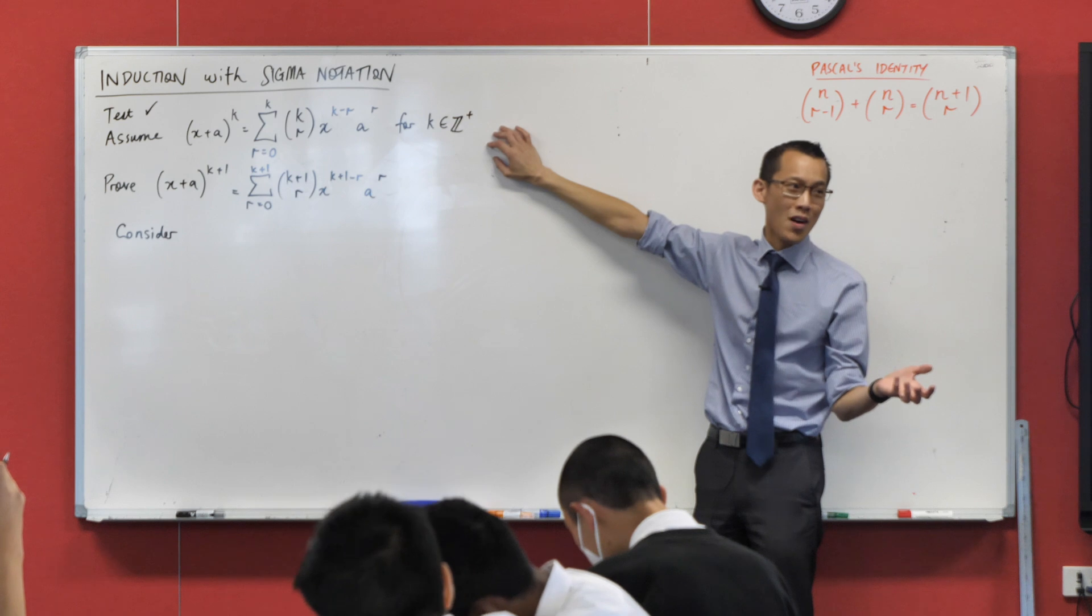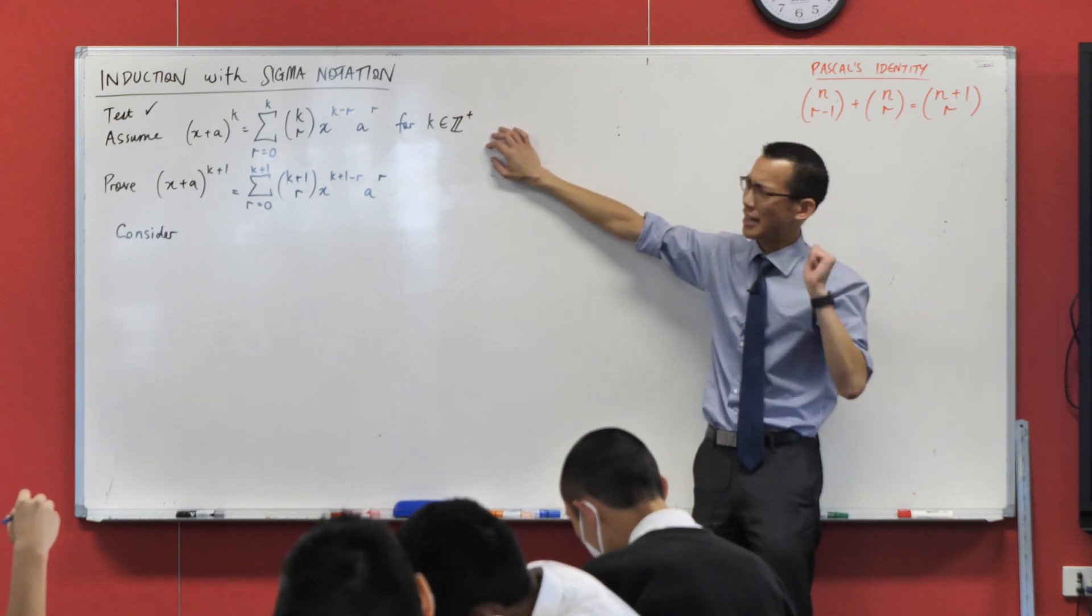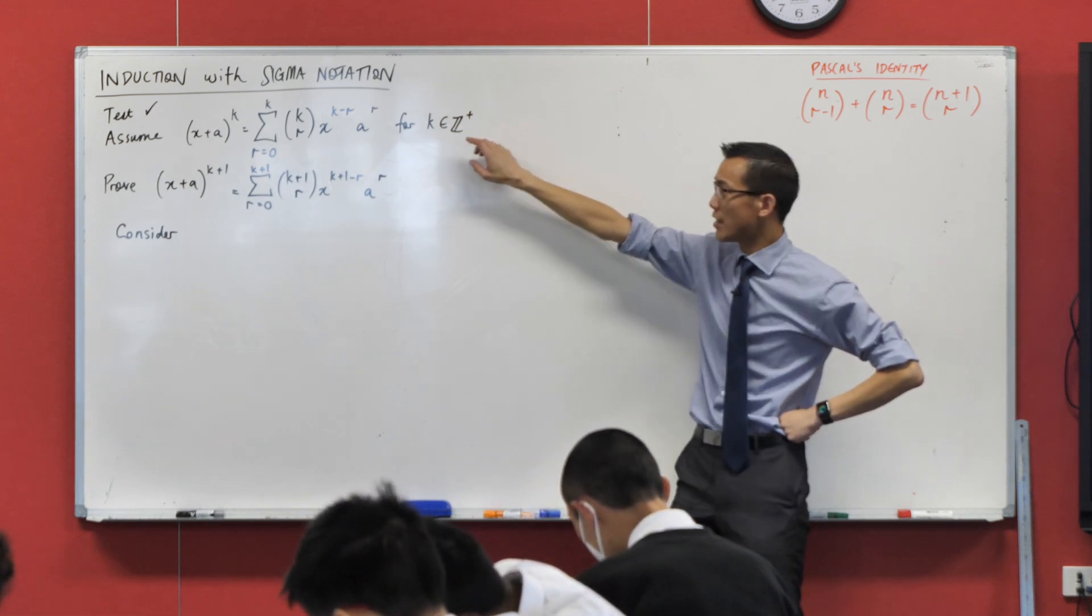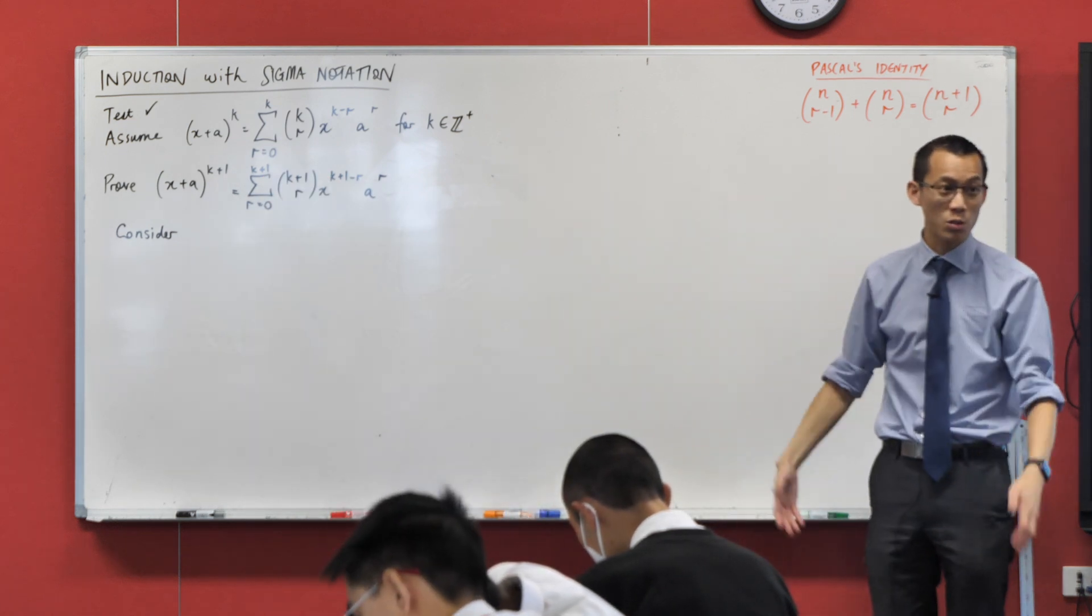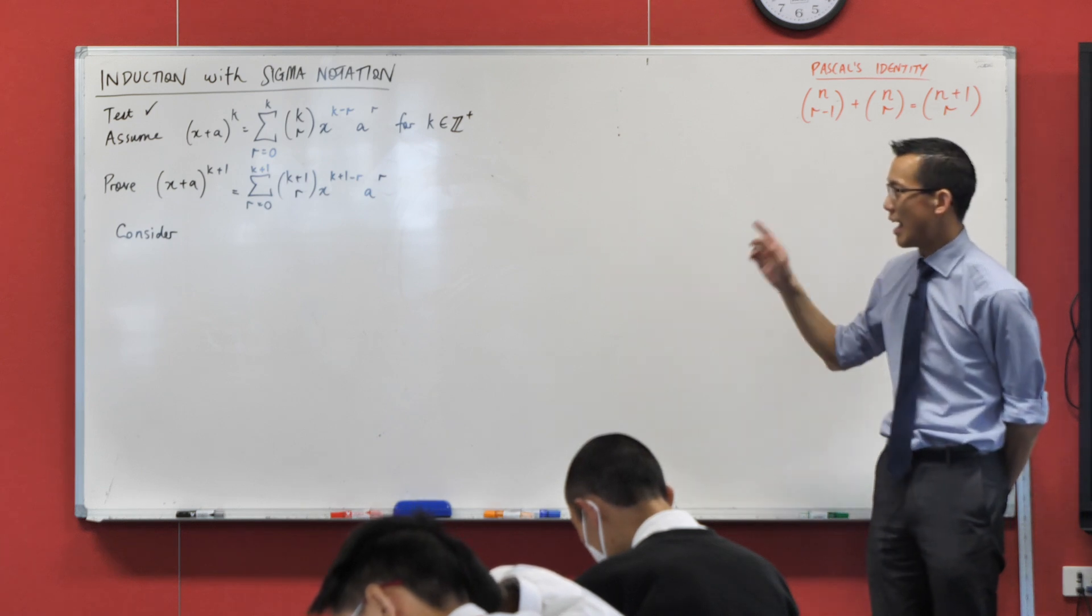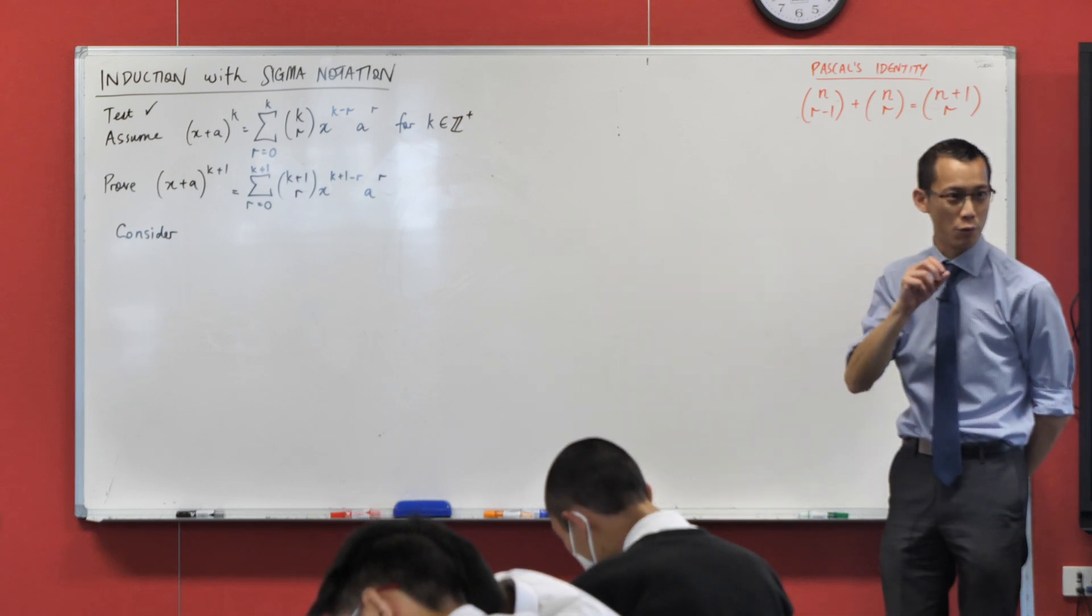Now, this is one of the reasons why this is, I wondered at first, like, why did they put this into extension two? Sigma notation, all that kind of thing, it used to be just in the regular old advanced course, what we used to call two units. I was like, what's the big deal? And then I did this example for myself and realized, okay.